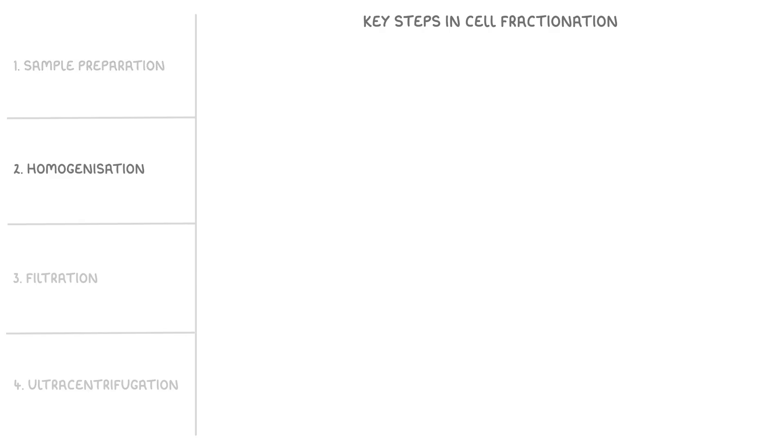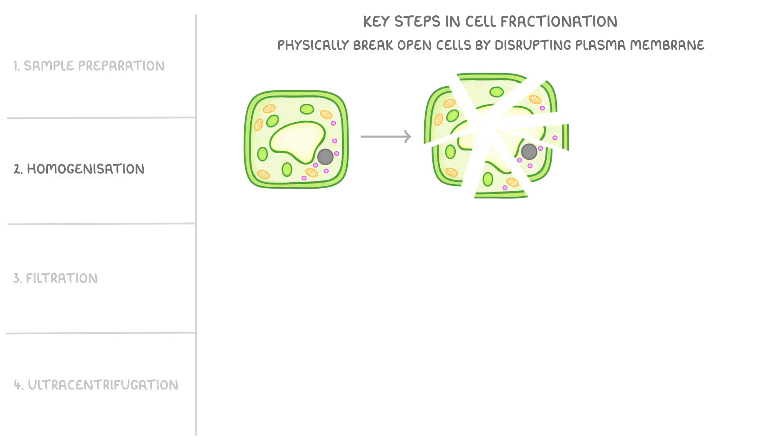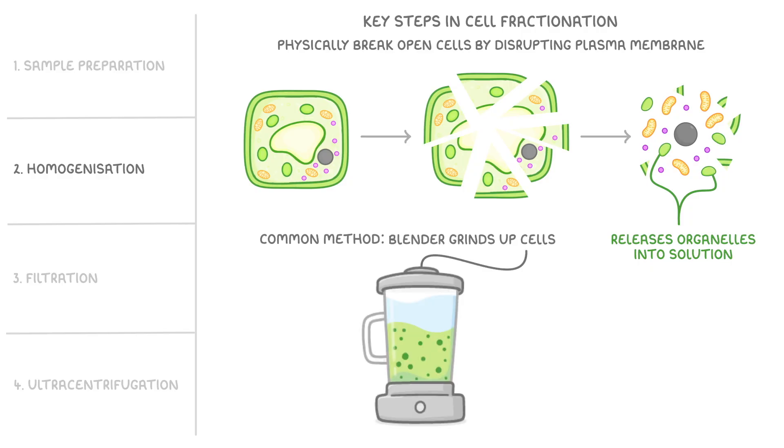Next, we carry out homogenisation and this is where we physically break open the cells by disrupting the plasma membrane and this releases the organelles into the solution. One common method of doing this is by using a blender that grinds up the cells.